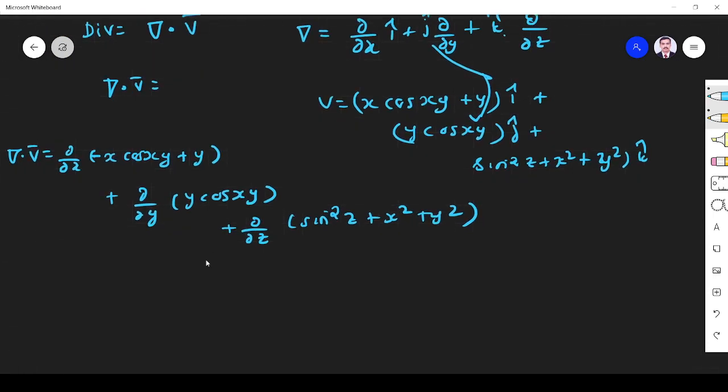If you simplify this, the divergence of vector V is equal to minus x minus sin xy y and plus y minus sin xy, differentiate the above values and what you get is 2z cos z squared.